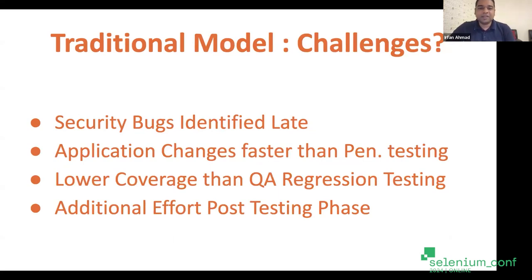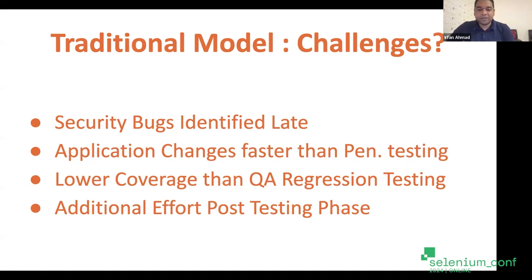The challenges with this traditional model are: bugs are identified late, application changes faster than the penetration testing cycles, the coverage is always less compared to QA regression testing. In regression testing we cover all flows, whereas in penetration testing this is oftentimes difficult. There's also additional effort in the post-testing phase. These are the challenges in the traditional model of security testing.